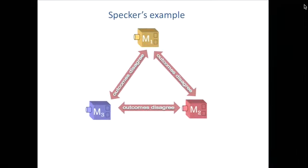Specker realized this was conceivable, analogous to what we see in quantum theory — he was thinking about quantum theory at the time. He realized that in that scenario, when you measure these variables together, you always find their outcomes disagree. And when you measure these other guys together, their outcomes always disagree, and similarly for the third pair. Those are three different counterfactual scenarios; they can't all be done at the same time.